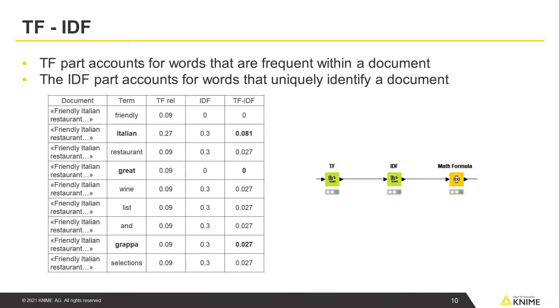A common practice is to multiply the IDF and TF scores into one metric called TF-IDF. The TF part accounts for words that are frequent within a document, and the IDF part accounts for words that uniquely identify a document. Words that occur frequently within but rarely across documents, such as Italian, have higher TF-IDF scores than words that occur rarely within a document, such as Grappa, or frequently across documents, such as great.